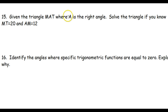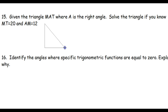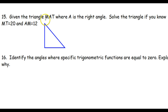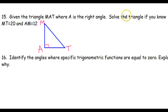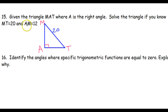They tell us that it's triangle MAT and A is the right angle. So let's just draw a right triangle. A is the right angle, so that means the acute angles are M and T. Solve the right triangle if you know that MT is 20, so the hypotenuse is 20, and AM is 12. Solving the right triangle means finding the missing side and the two missing angles.